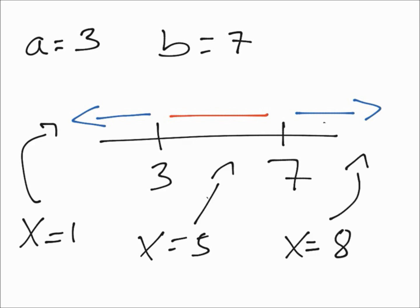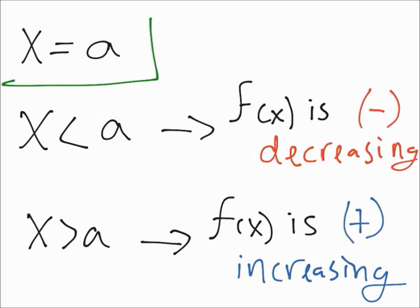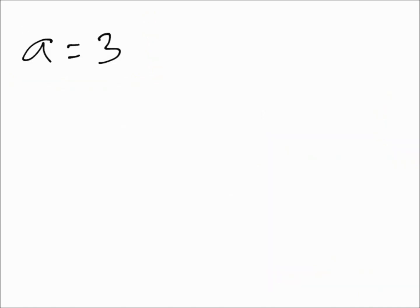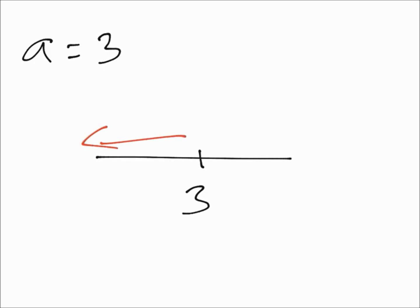That's the complicated part. If you only have one critical point, it is way easier. Let's call your critical point A, so x equals A. Anything below A is going to have a decreasing function and a negative slope. Anything above A is going to have an increasing function and a positive slope. This is your point — anything below is decreasing, anything above is increasing.